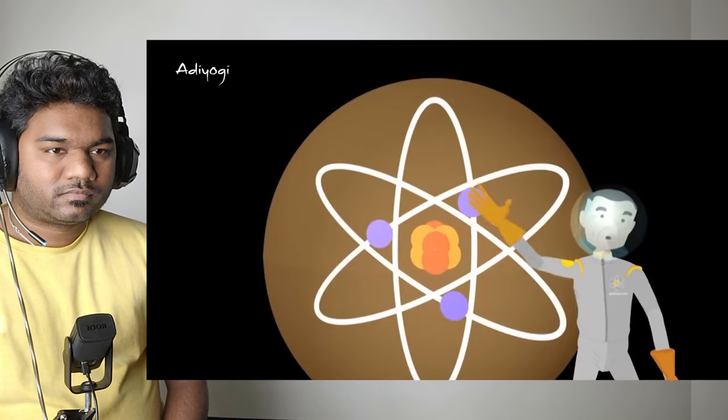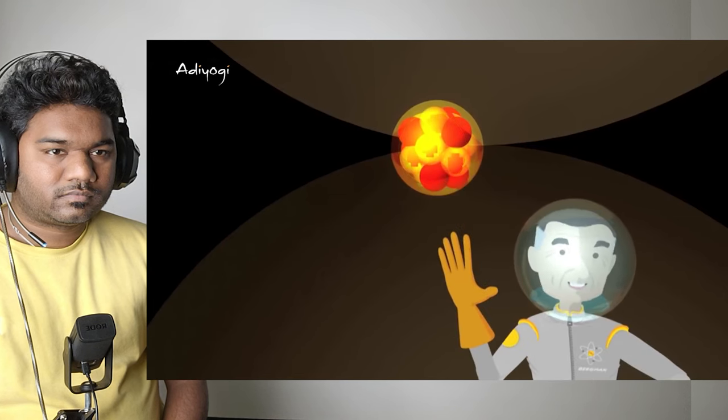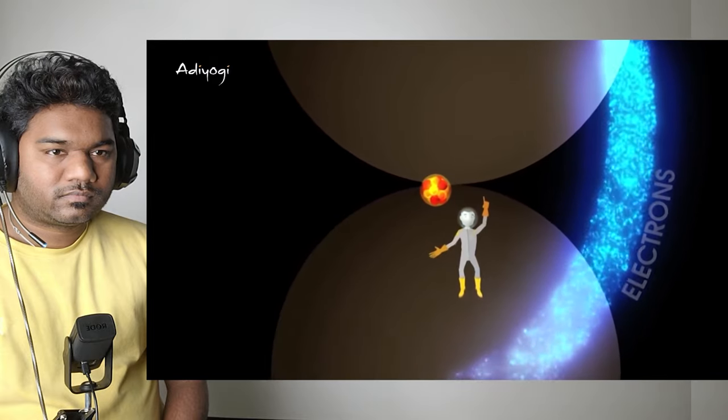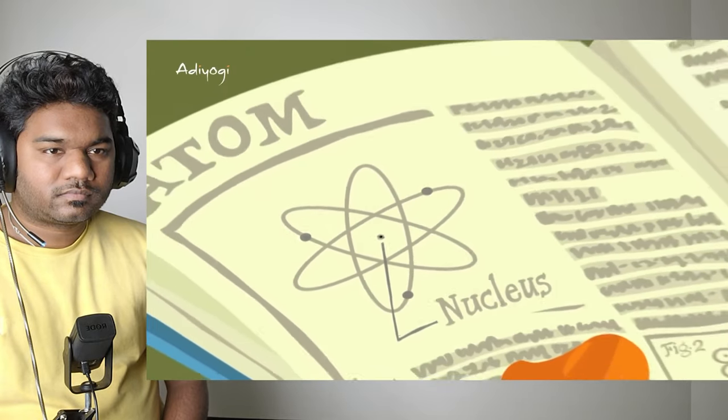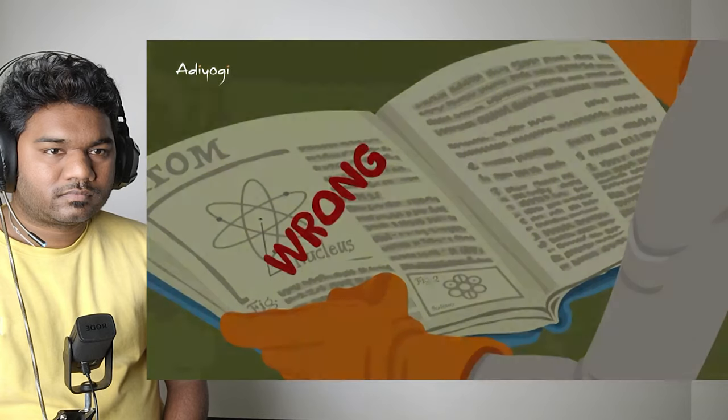Then by the time you came to high school, they wrote a different picture. They wrote one central circle which contains proton, neutron, and electrons are going around like planets in different formats. But now they know it's completely wrong. And we have always known it's completely wrong. That's why textbooks never ever interested me.